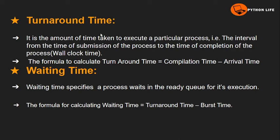The next criterion is turnaround time. Turnaround time is the total time taken to execute a particular process — from submission to completion. It is the amount of time taken from when the process is submitted to when it finishes execution. Turnaround time equals completion time minus arrival time, where arrival time means the starting or submission time.